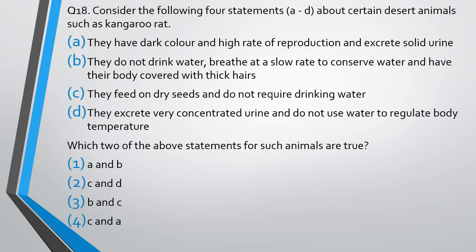Question number 18. Consider the following 4 statements about certain desert animals such as kangaroo rat. Statement A: they have dark color, high rate of reproduction, and excrete solid urine. Statement B: they do not drink water, breathe at a slow rate to conserve water, and have their body covered with thick hairs. Statement C: they feed on dry seeds and do not require drinking water. Statement D: they excrete very concentrated urine and do not use water to regulate body temperature. The correct answer is option 2 — statements C and D are true.